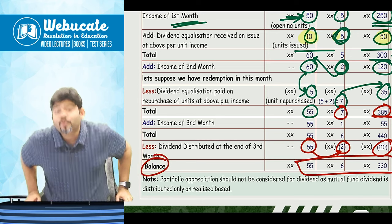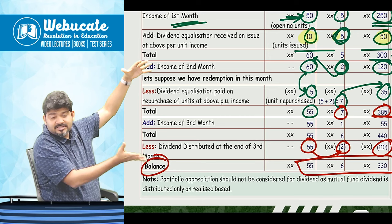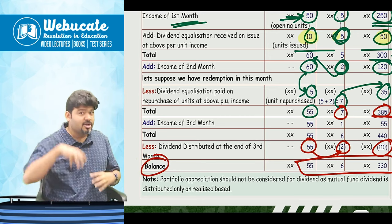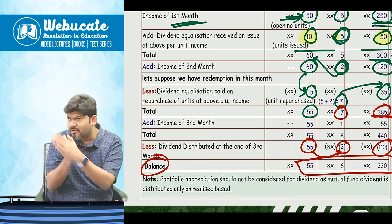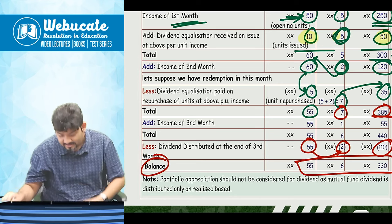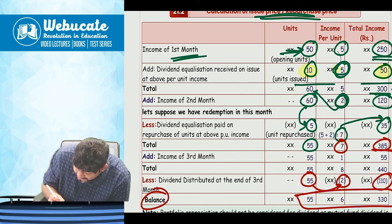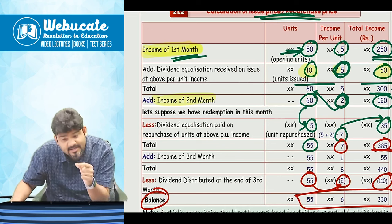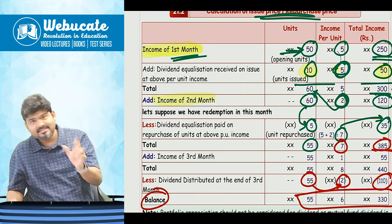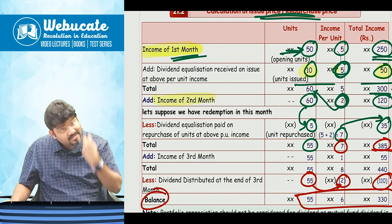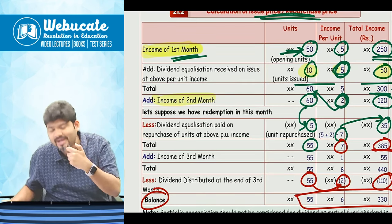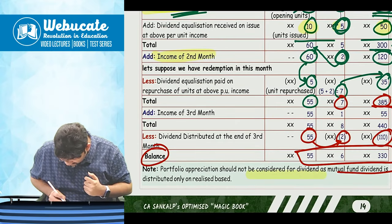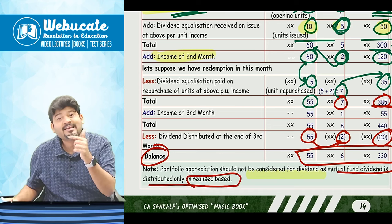Important note: portfolio appreciation is not included when calculating DER, because it is an unrealized gain. SEBI rules state dividend can only be distributed from realized gains. DER is calculated only on real income — dividends received, interest earned, capital gains on actual sales — not on unrealized portfolio appreciation.